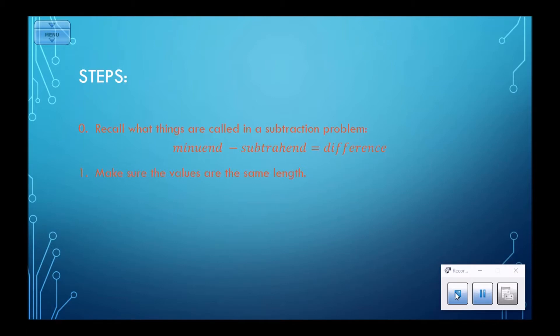If they weren't for some reason, then you're not using the two's complement method for anything. You're just subtracting, presumably, numbers that will have a positive difference, and you'll have to pad one of them with zeros, the shorter one with zeros, to make it the same length.